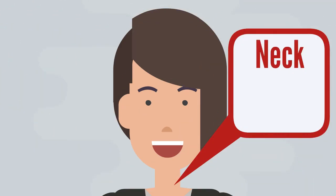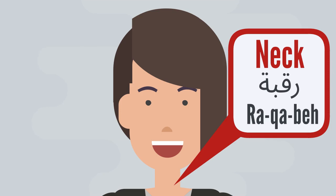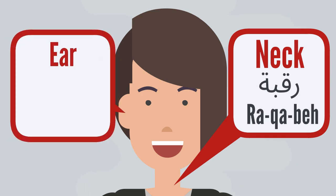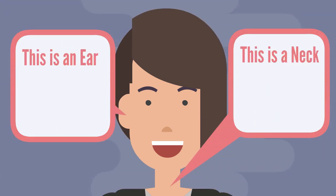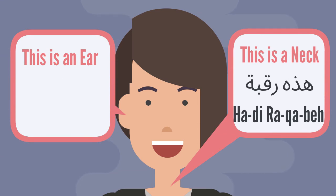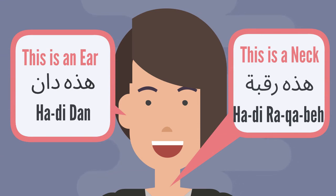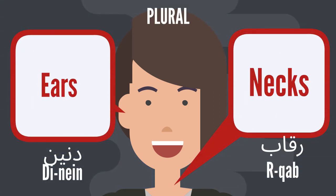Next is neck — rā'bē. And ear — dā'n. This is a neck — hādī rā'bē. This is an ear — hādī dā'n. And the plural for necks is rā'b. And for ears — dīnēn.